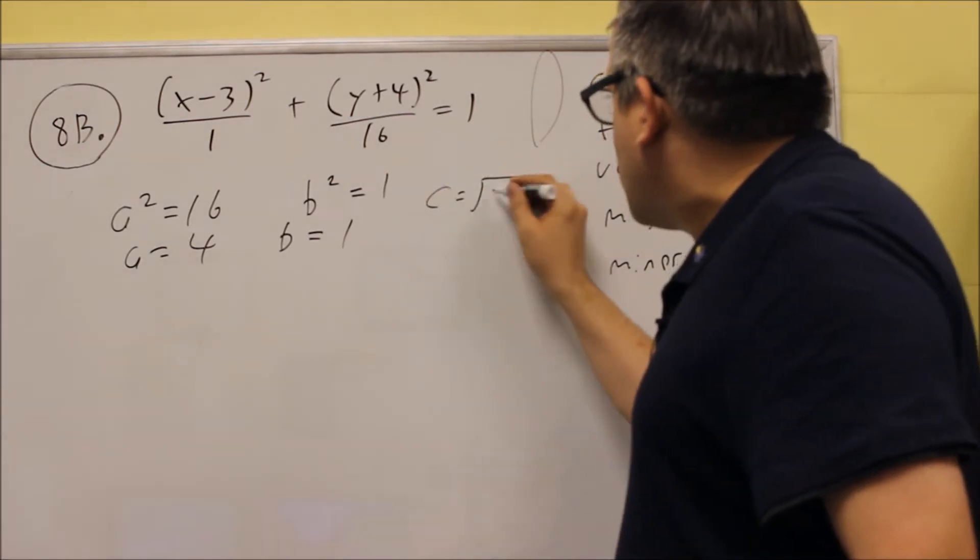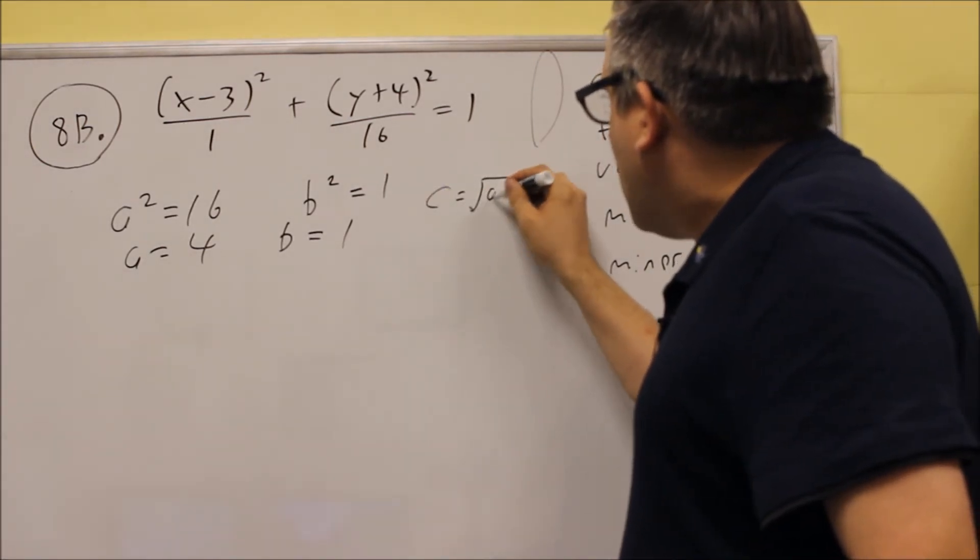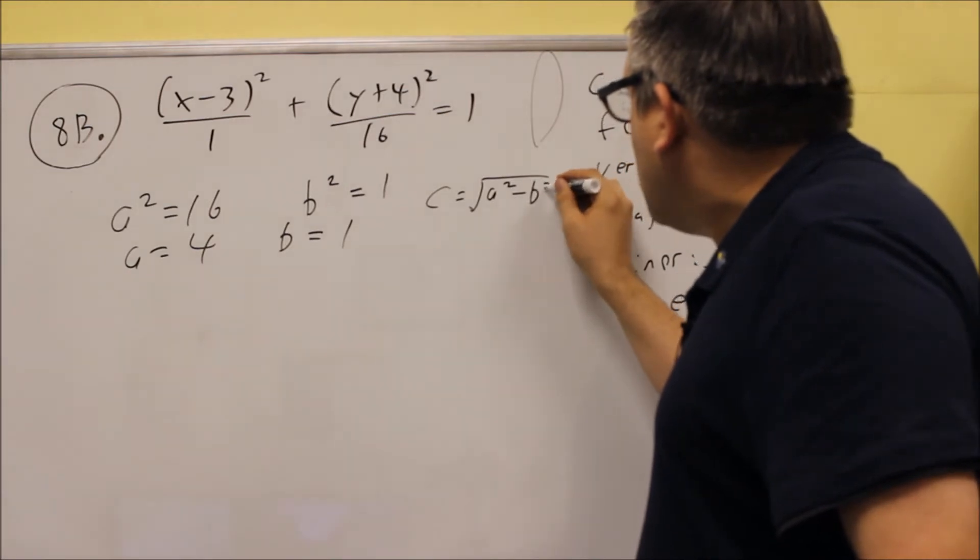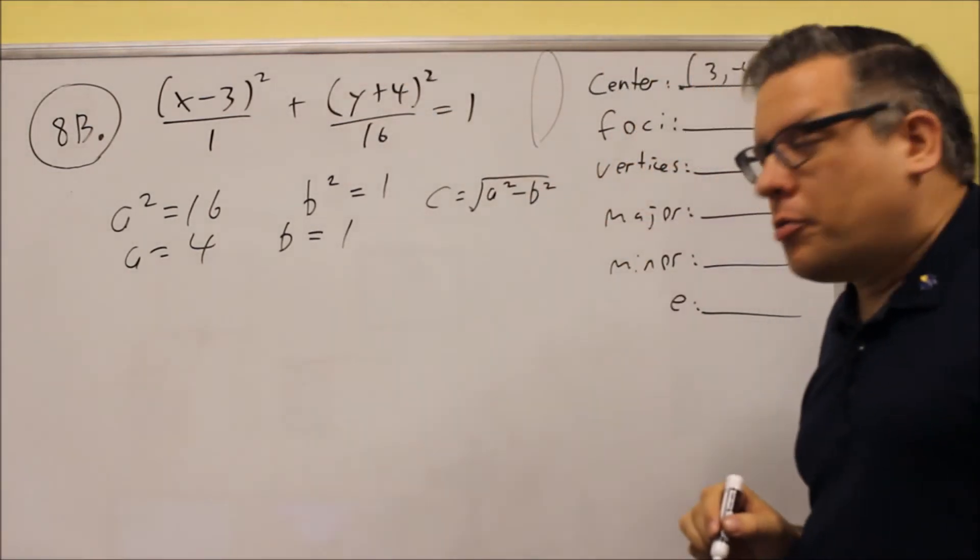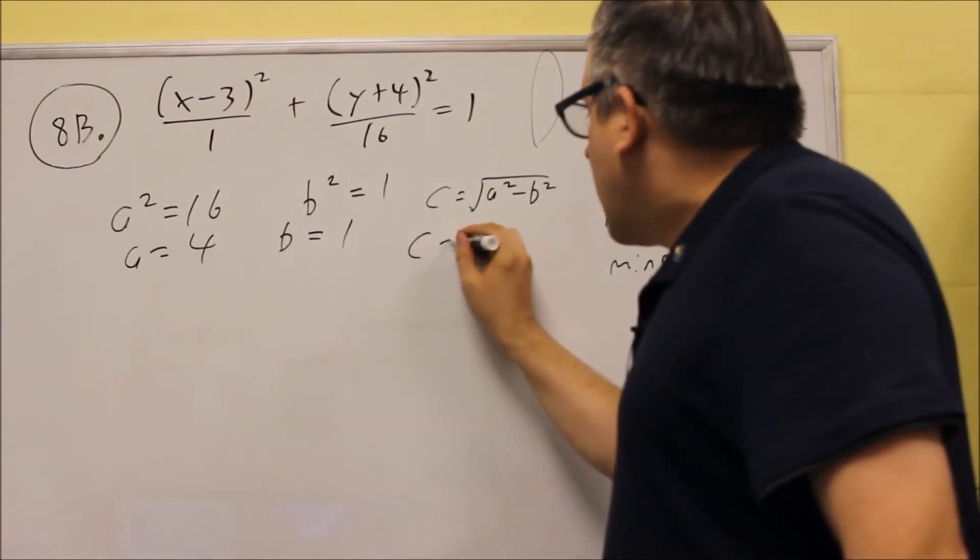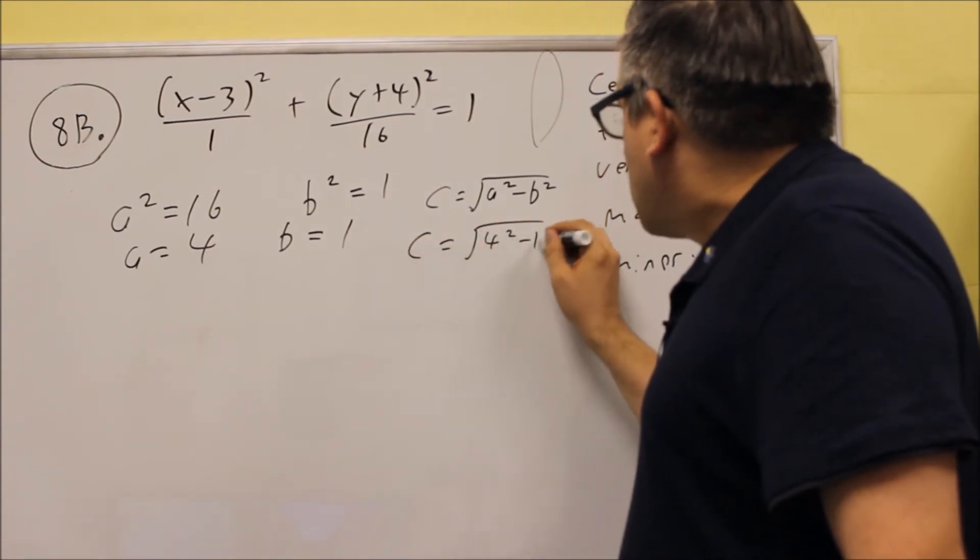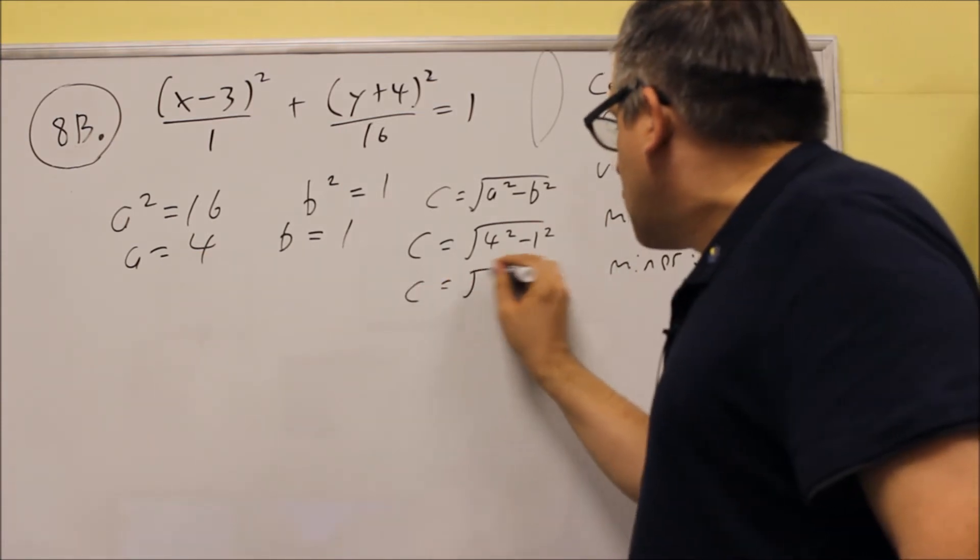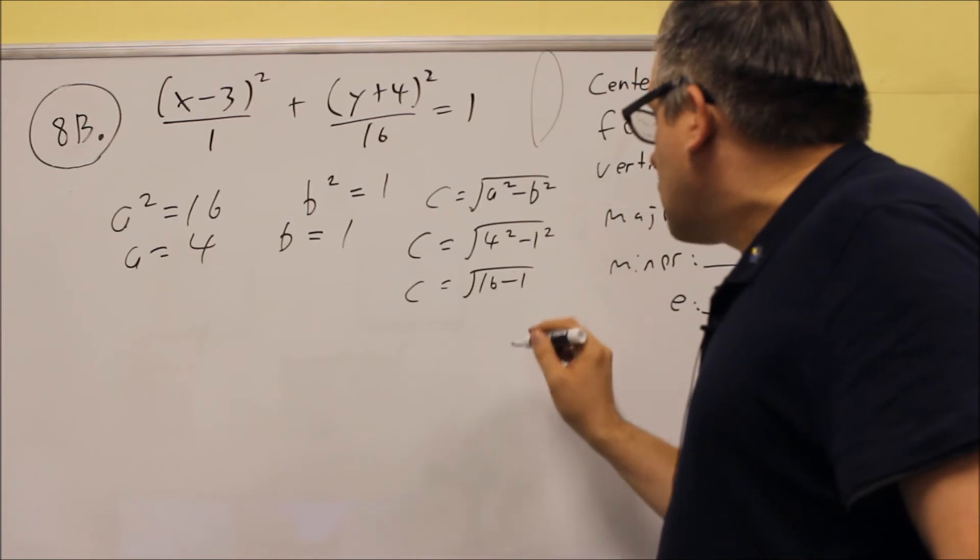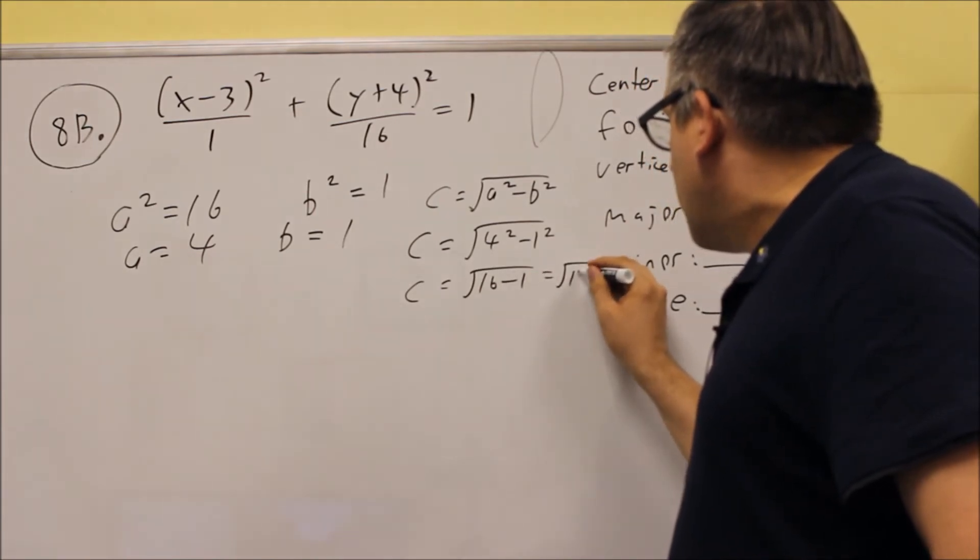We're going to use our formula for c. Again, it's a squared minus b squared. The sign inside here is opposite of what it is in the formula, so we have that. Next we're going to do 4 squared minus 1 squared. And so this is going to be the square root of 16 minus 1, which is the square root of 15.